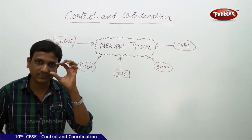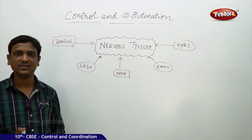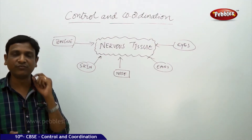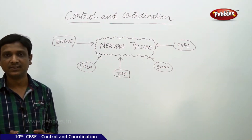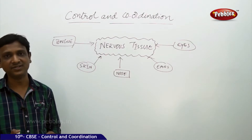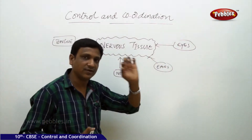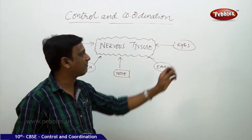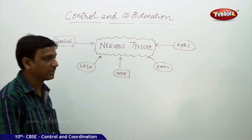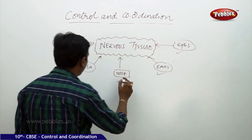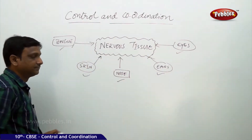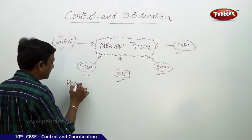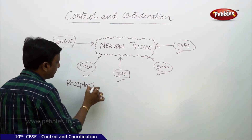Our eyes have got some receptors. What is a receptor? A specialized nerve cell. The tip of this specialized nerve cell is called a receptor. The tip of the nerve cell is specialized to identify the change. These nerve cells with specialized tips are found in our sense organs: eyes, ears, nose, skin, and tongue. These specialized nerve tips are called receptors.